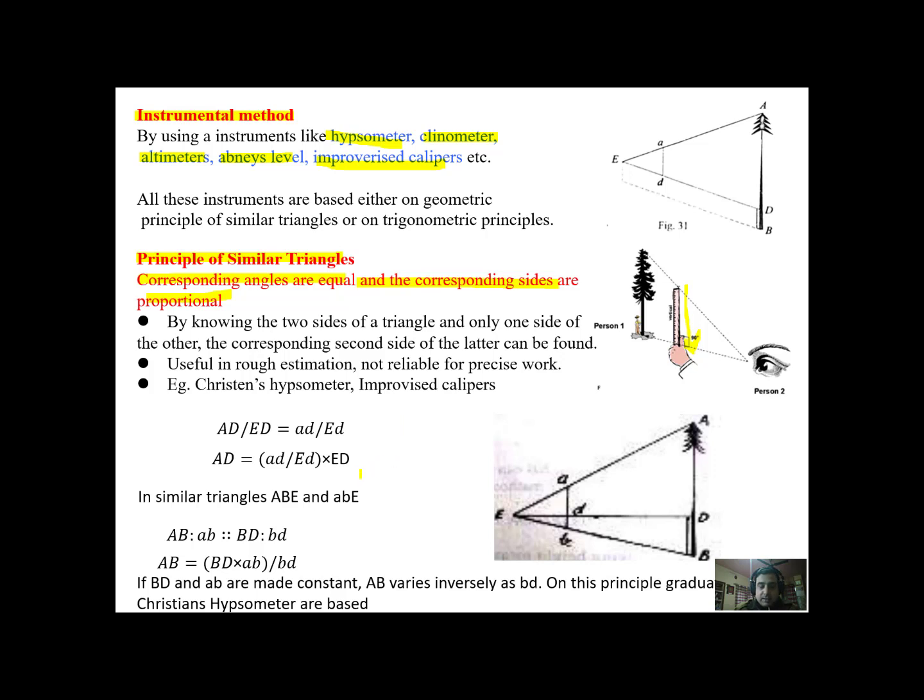Now we have a set of triangles here. You can see triangle, point A, point B and point E forming a triangle ABE. Now there is another triangle that is small a, small b and capital E, this is a smaller triangle. Now these two triangles are similar triangles. Using the principle of similar triangles we can say that AD upon ED equal to small ad upon capital ED. From here we can derive AD.